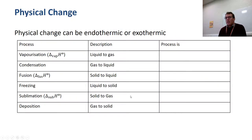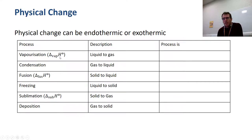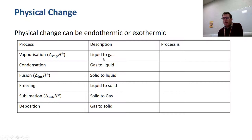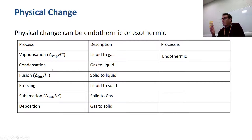These are common enthalpies of physical change: fusion, vaporization, and sublimation. The reverse processes will also have enthalpy labels with opposite signs. Vaporization — liquid going to gas — obviously requires energy input, so that process is endothermic. The reverse, gas going to liquid, is called condensation — think of steam condensing on a window — and that is exothermic.